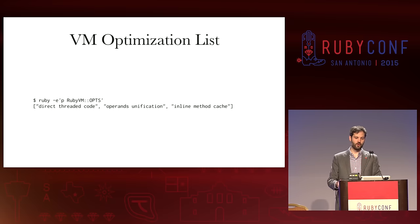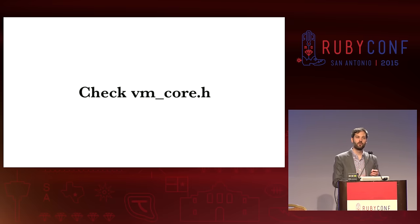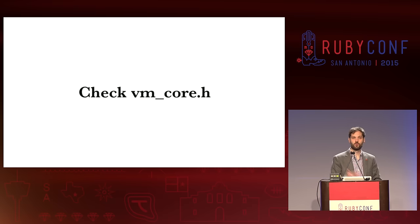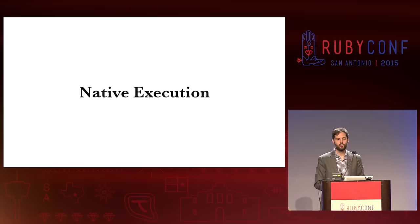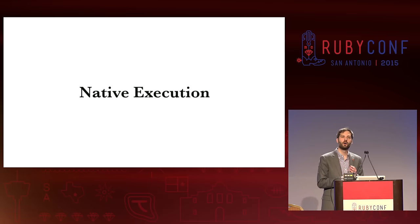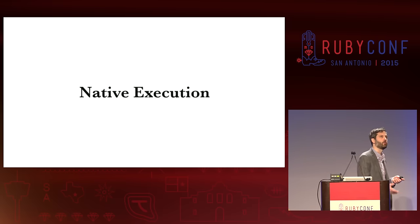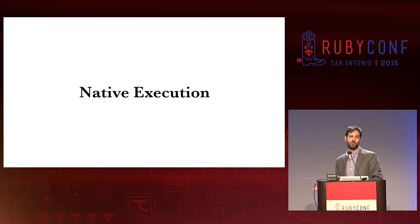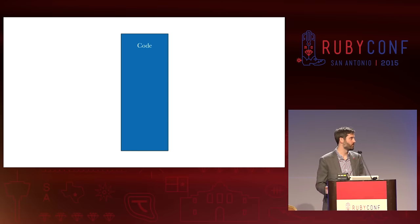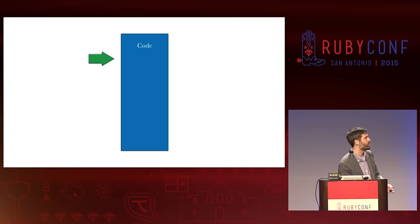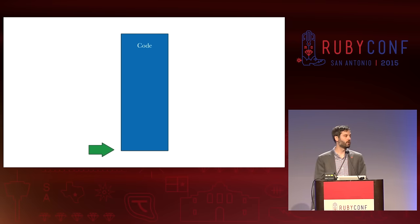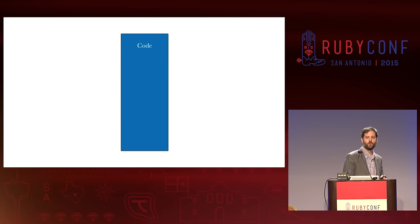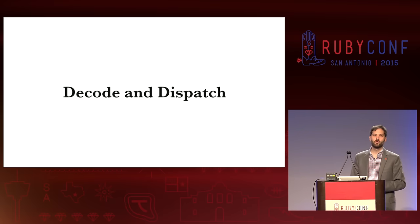Next we'll look at VM optimizations, which are different from our compile-time optimizations. We can see the optimizations our VM has by running this code — there's a constant called OPS. You'll see direct threaded code, operand unification, and inline method cache. I'm only going to talk about direct threaded code today. If you want to manipulate any of these, check VM_core.h and you can tweak stuff there. Let's talk about different types of virtual machines. We have native execution machines, which is what Ruby 1.8 was like.